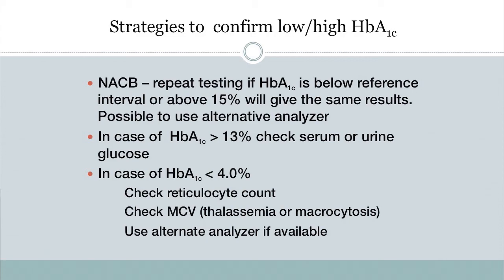Here is a strategy for handling abnormal A1c results. When we see a high A1c, is it real? When we see a low A1c, is it real? The National Academy of Clinical Biochemistry suggests repeating the test if the A1c is below the reference interval or above 15%. However, if you use the same method again, all you've done is confirm your method's consistency. In our laboratory, when the hemoglobin A1c is greater than 13%, we check whether a serum or urine glucose result is available. If both serum glucose and A1c are high, we have concordance; if the serum glucose is high and A1c is low, we have discordance that needs to be resolved.